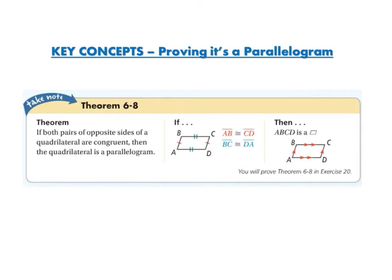One theorem for proving a quadrilateral is a parallelogram: if both pairs of opposite sides are congruent, then the quadrilateral is a parallelogram. So if one pair of sides is congruent and the other pair of sides is congruent, then the quadrilateral is a parallelogram.